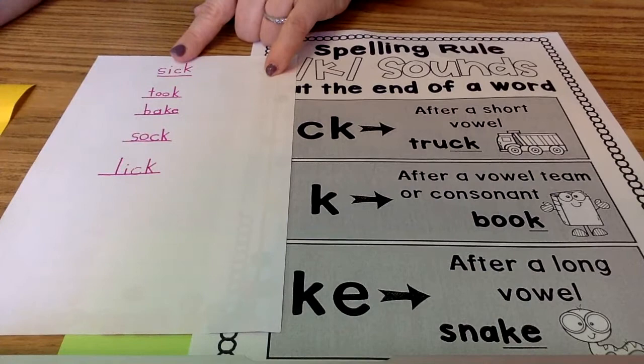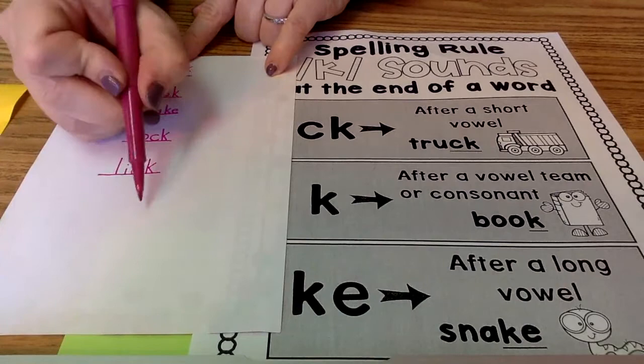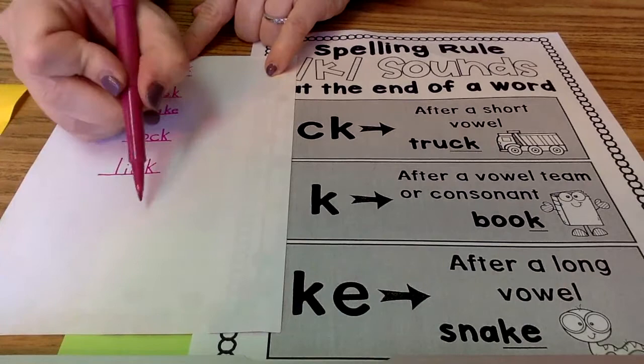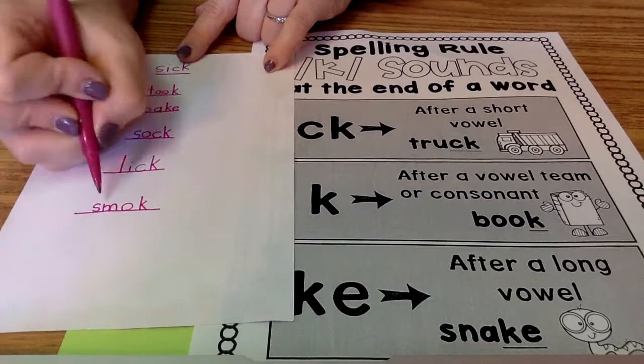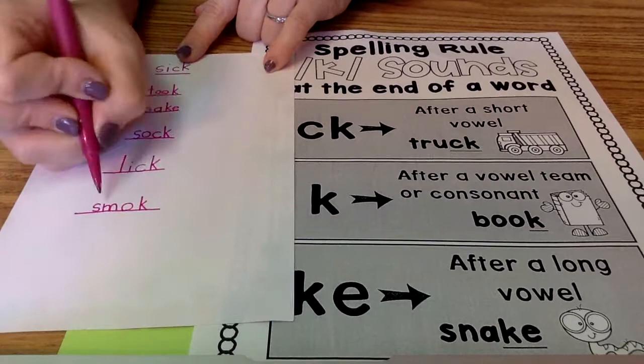My next word is smoke. S-M, O, K. Now, I need an E at the end to make that O be long and say smoke.